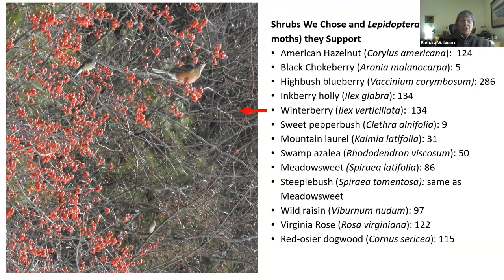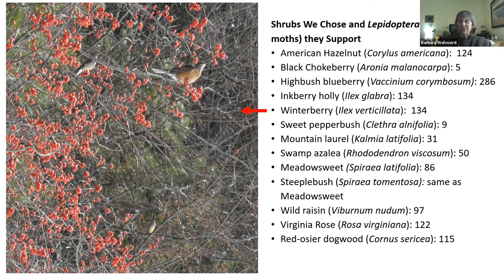One of the plants we chose was winterberry. Here's a picture of a mature winterberry bush elsewhere in our landscape — great food for birds. This winterberry supports 134 different species of Lepidoptera, which are butterflies and moths. By support, we mean not just nectar, because butterflies can get nectar from a lot of plants including alien plants. But the larvae — the little caterpillars — are very, very picky. 90% of native caterpillars will feed on only one or a few species of plants. It's like the monarchs with the milkweed: if they can't get milkweed, they're gone. That's what's happening. So we wanted plants that would support lots of species.